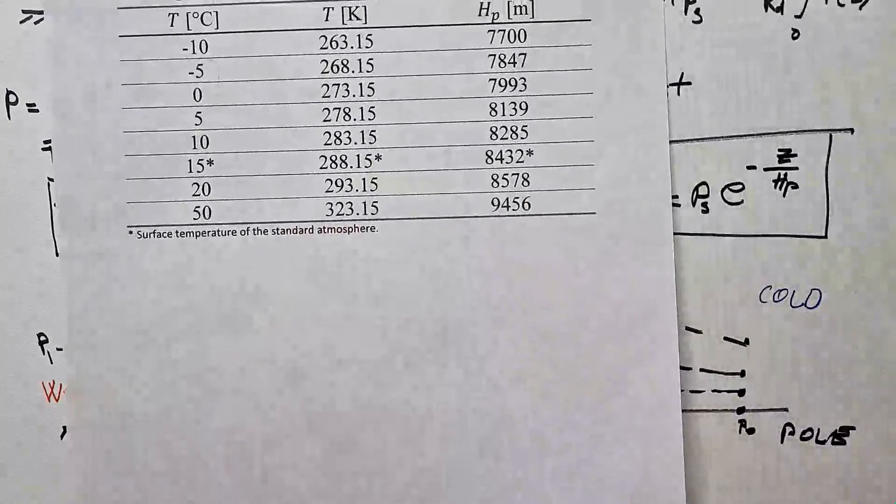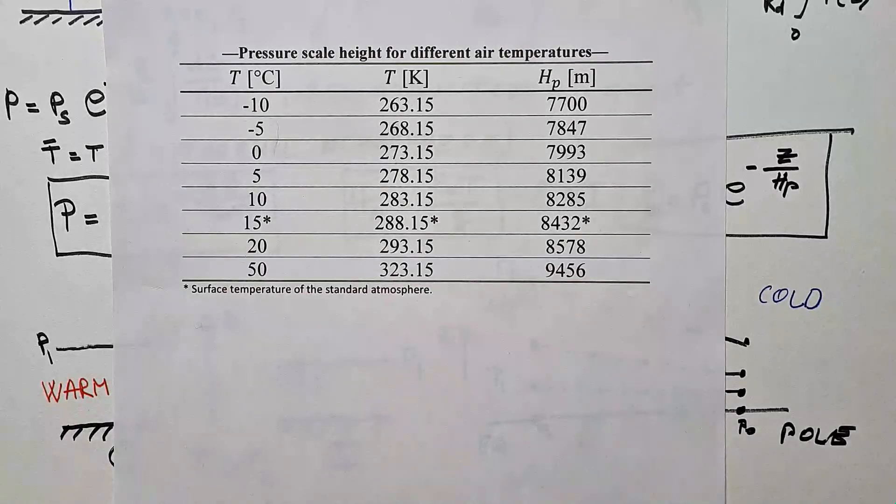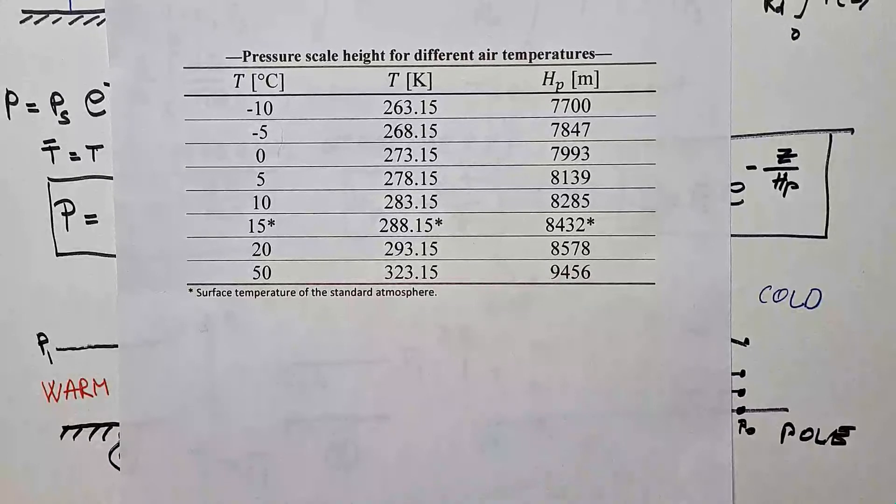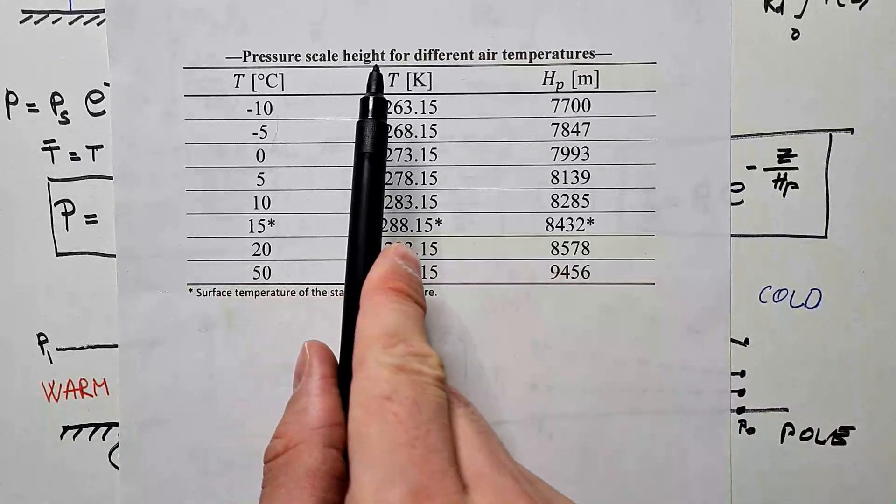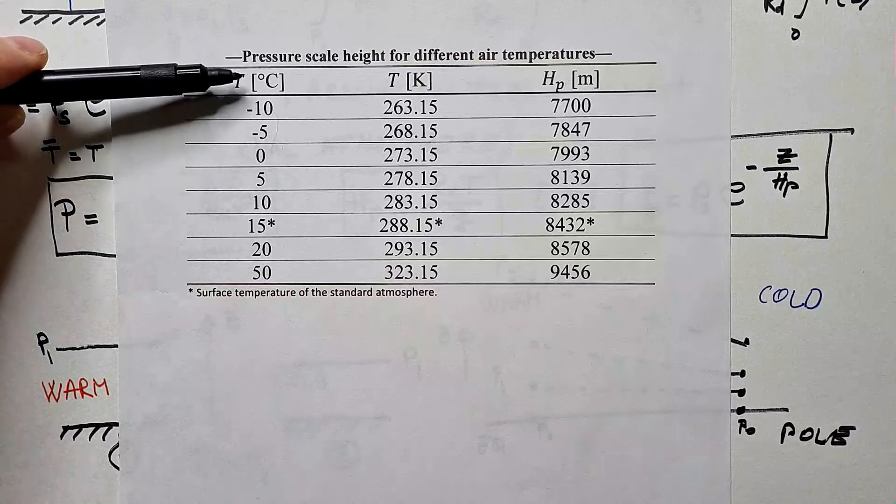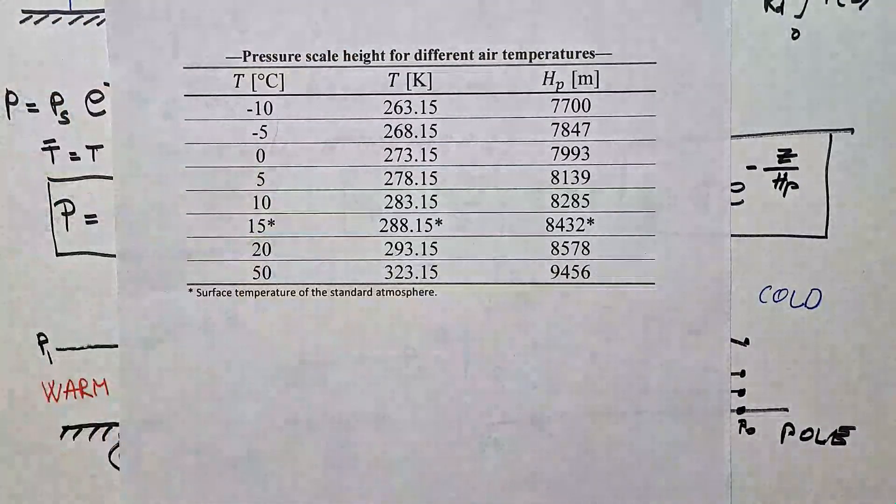So, and at the end, I would like to show you a nice table that will help you to better understand that this. Here is a pressure scale height for different air temperatures. So, here is the temperature in degrees Celsius, temperature in Kelvins, and hp in meters.